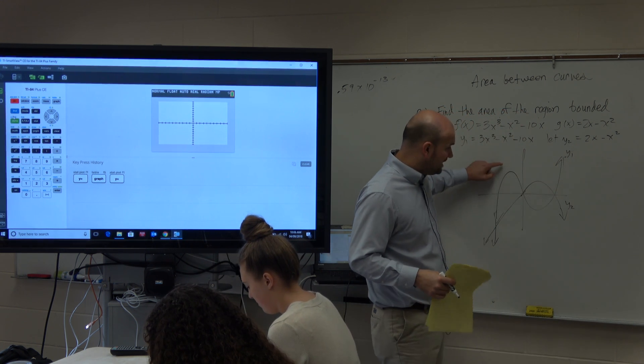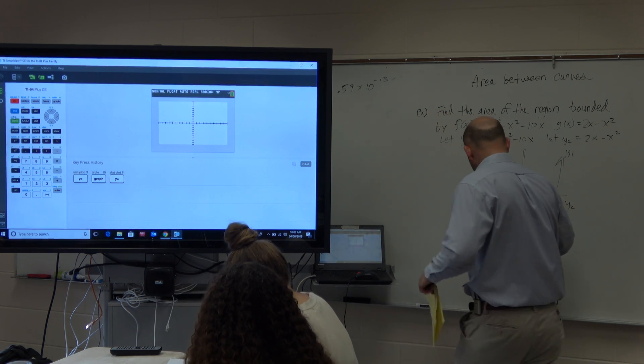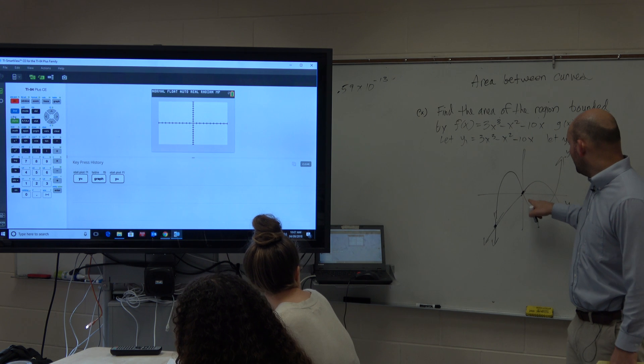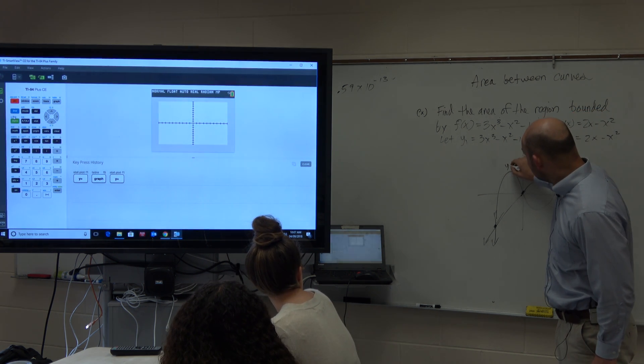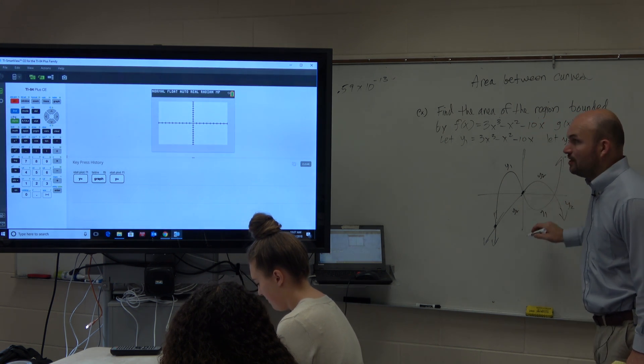Now this is important because notice what's on top over here. In this region we have our intersection points. And here we notice that our y1 is on top, right? y1 is on top, y2 is below. But over here, y2 is on top and y1.